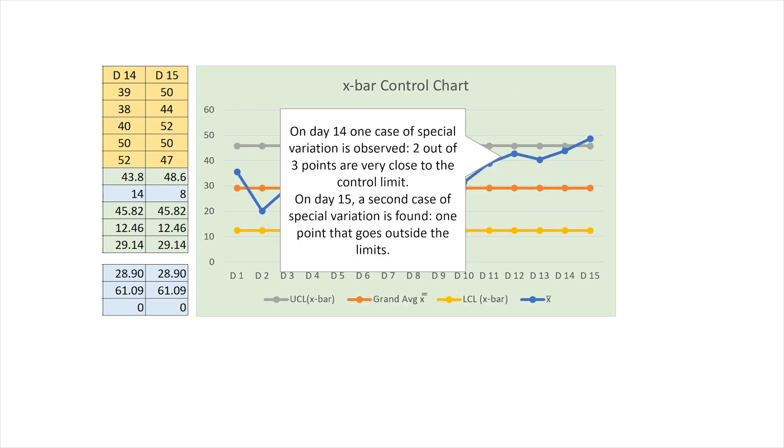However, on day 14, one case of special variation is observed. Two out of three points are very close to the control limit. On day 15, a second case of special variation is found, one point that goes outside the limits.